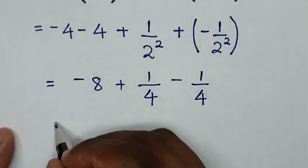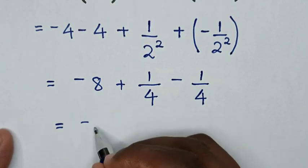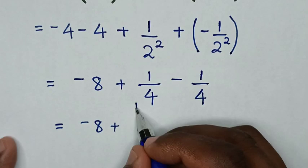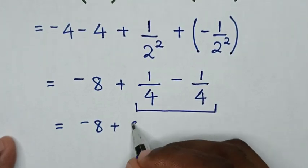Then in next step, it will be equal to, this negative 8, then plus, in here, 1 over 4 minus 1 over 4 is 0.